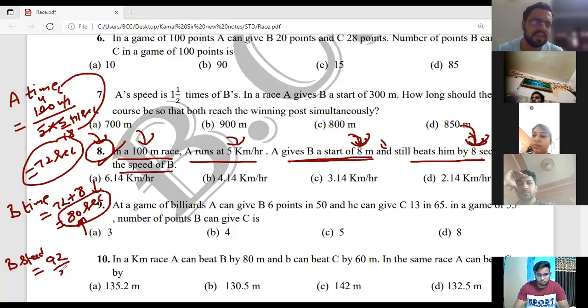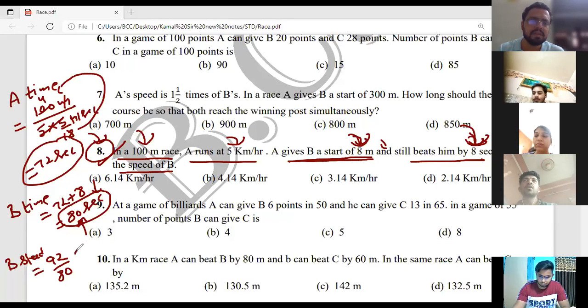So if I calculate B's speed: 92 by 82 meters per second. Now quickly tell me, how do we convert meters per second to kilometers per hour? 18 by 5.